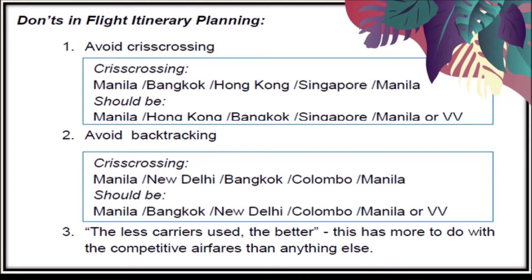Number two: avoid backtracking. What is backtracking? Backtracking is like Manila, New Delhi, Bangkok, Colombo, Manila — this is not correct. It should be Manila, Bangkok, New Delhi, Colombo, Manila, or vice versa. Again, you must be knowledgeable of the countries to be visited.